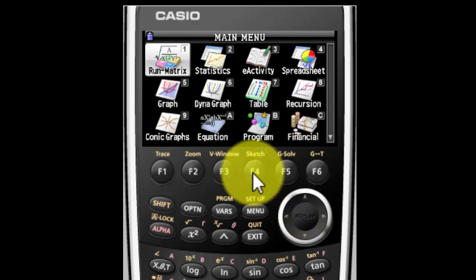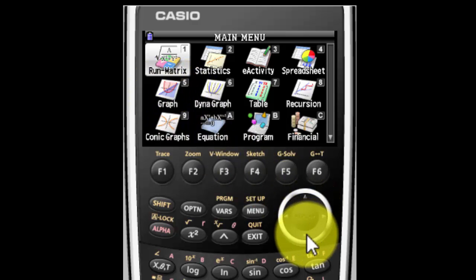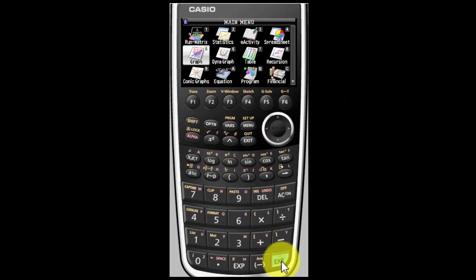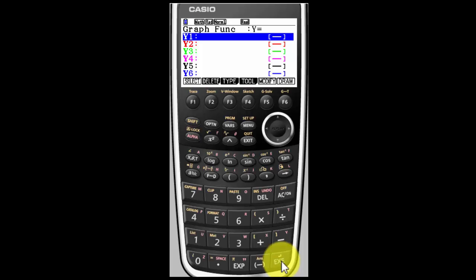Since we want a graph, we're going to look for the graph icon. For mine, it's number 5. Yours may be a different number. Highlight that icon and hit Execute and you're in the graphing function.